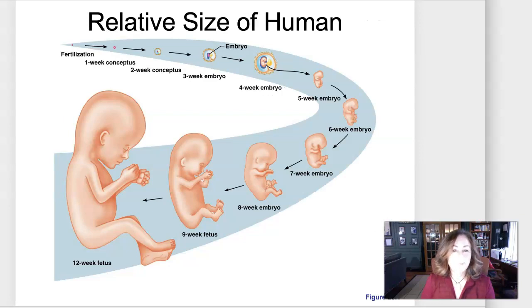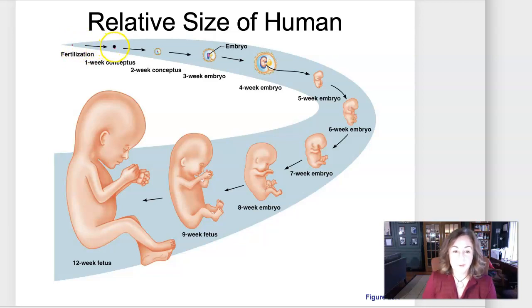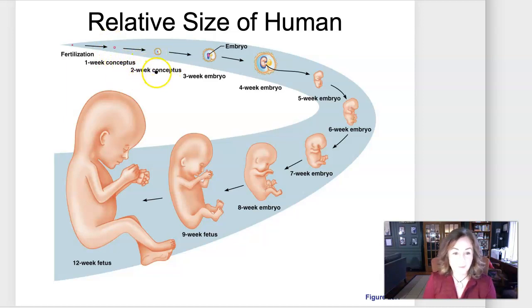To say a few words about that, even though it's not officially in the class: during the first trimester, fertilization occurs. It takes about one week to go down the fallopian tube and about one week for implantation. We're calling the conceptus the product of conception.